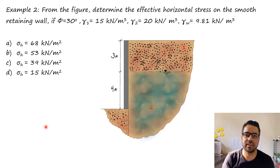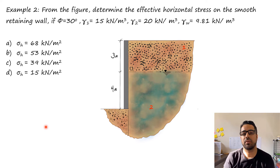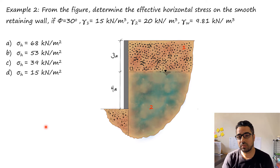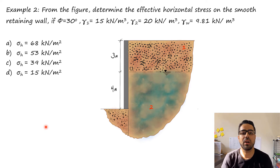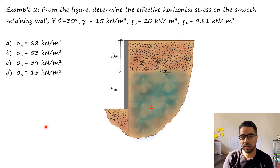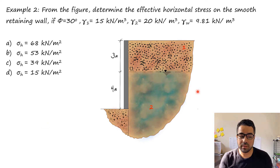Hello guys, it's Dr. AJ. Last time we solved the example on stability of a retaining wall under the at-rest condition, so we used the K-naught factor. This time we will be solving two examples, but they will include the effect of water and will be on active earth pressure. So let's get started.